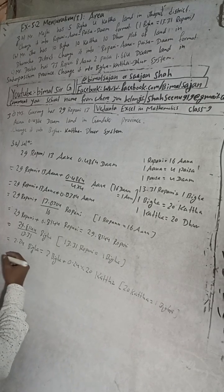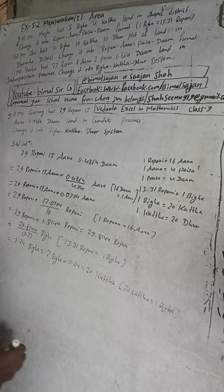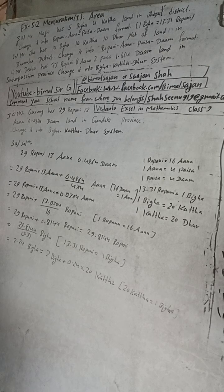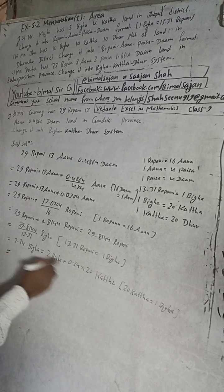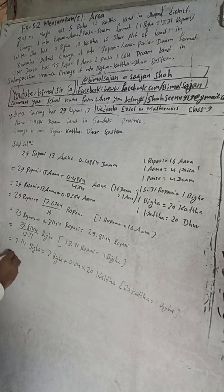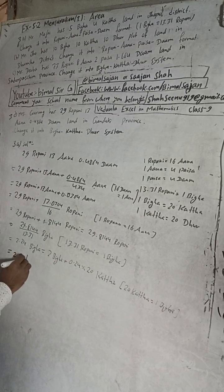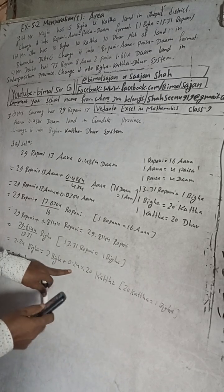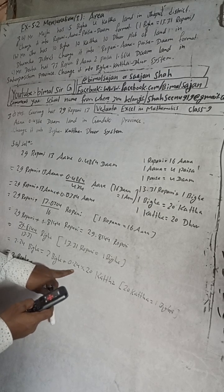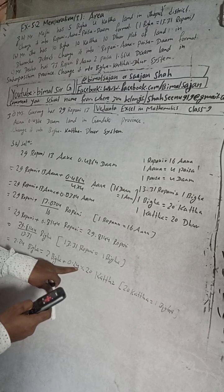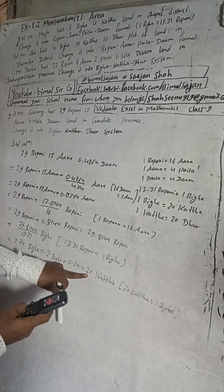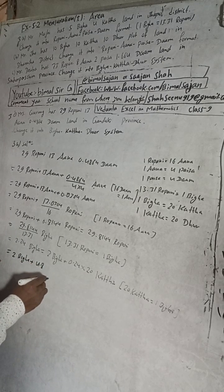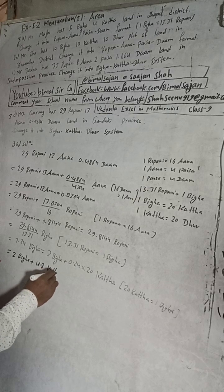Now here, I get 0.24. Now multiply with this 20, 4.8. You see 4.8 Katha now, this is here.